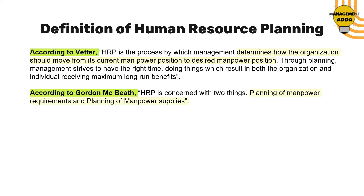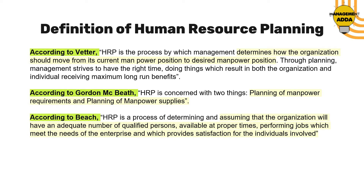According to Gordon MacBeth, human resource planning is concerned with two things: first, planning of manpower requirements, and second, planning of manpower supplies.